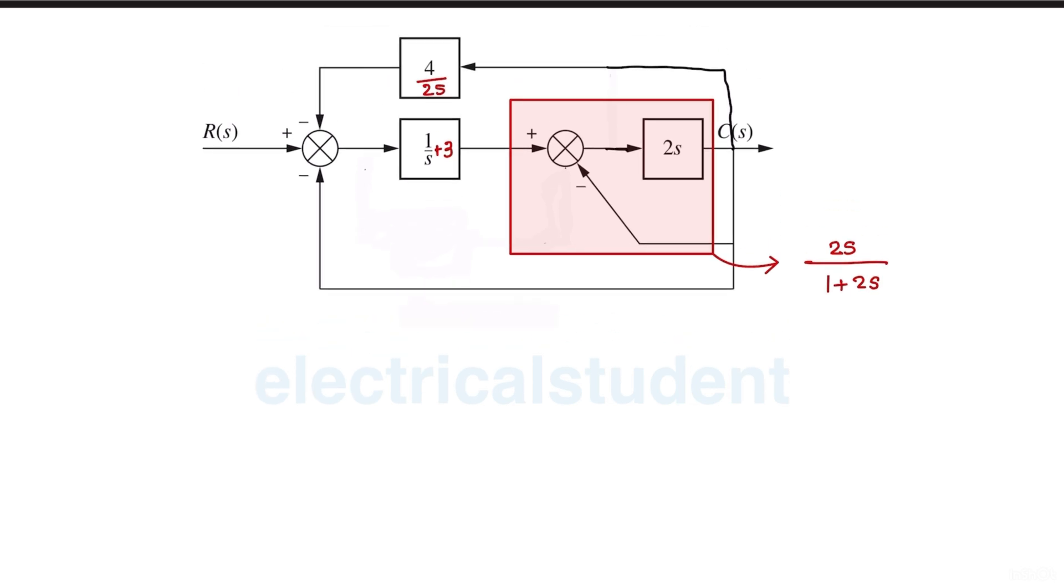This will be 2s over 1 plus 2s. So now the equivalent block looks like something like this. So this is as it is, and here this block 1 plus 3s over s.